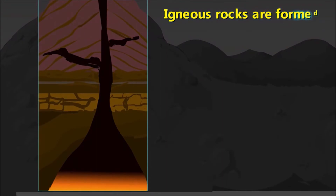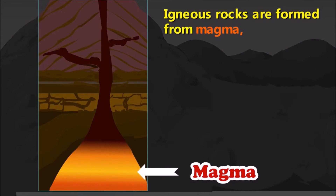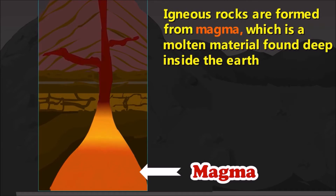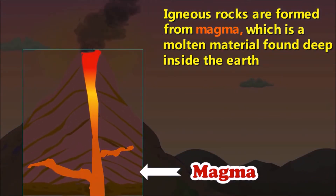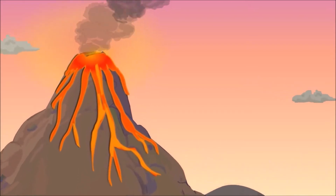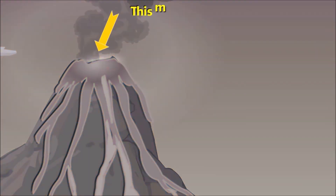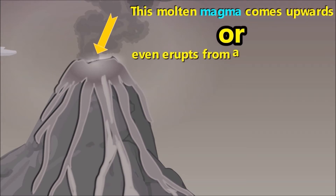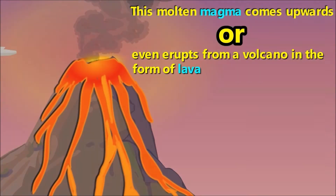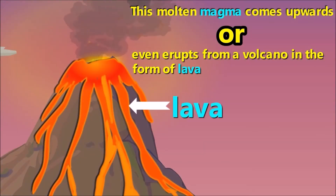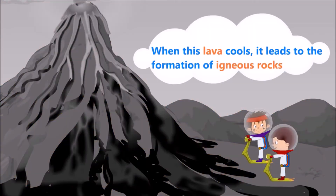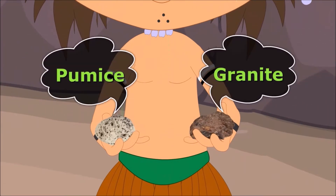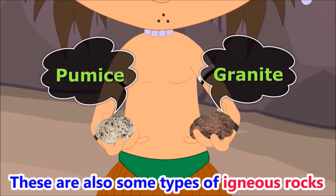Igneous rocks are formed from magma. Magma is a molten material found deep inside the earth's crust. This molten magma comes upwards or even erupts from a volcano in the form of lava. Lava leads to the formation of igneous rock when it cools. Pumice and granite are examples of igneous rock.